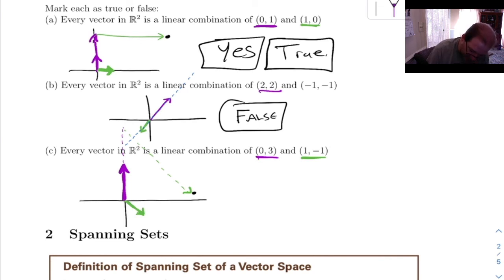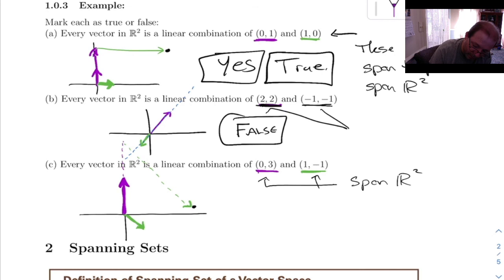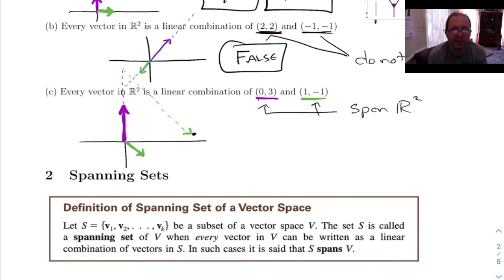This is leading up to this section down here on spanning sets. What we say is these two vectors span the plane, or we'd say they span R2. These two vectors here together they span R2. These two vectors though they don't span R2. And we'll look at the definition of spanning sets and more problems like this in the next video. Thank you.